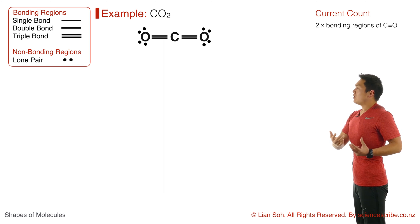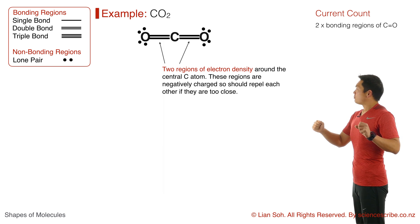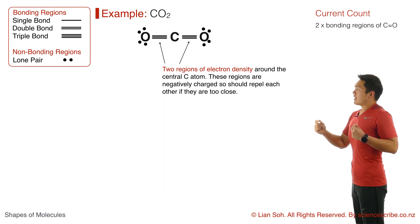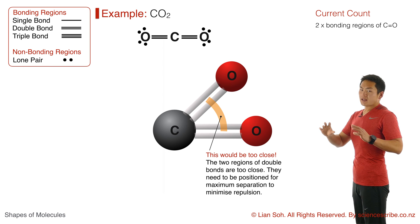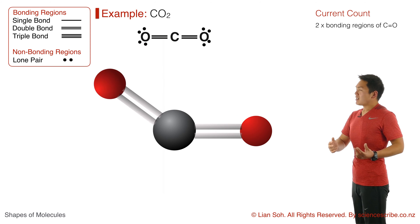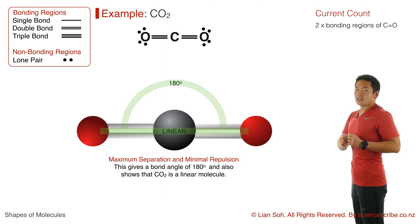Why is this important? Because electrons are negatively charged, and around the central carbon atom there are two regions of electron density — two regions of negative charge. Negative and negative charges repel each other, which means each of these double bonds should be placed as far away from each other as possible to give maximum separation and minimize repulsion. When I do that, the carbon dioxide molecule ends up with a linear shape and a bond angle of 180 degrees.